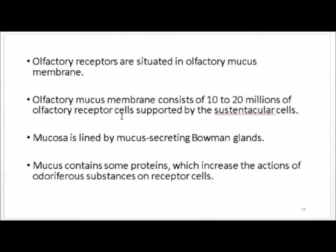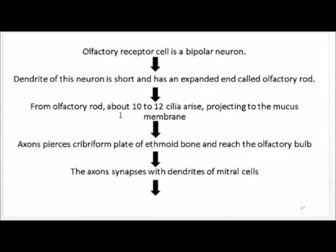To summarize point-wise: olfactory receptors are situated in the olfactory mucous membrane, which consists of 10 to 20 million olfactory receptor cells supported by sustentacular cells. The mucosa also contains mucus-secreting Bowman's glands. The mucus contains proteins which increase the action of odoriferous substances on receptor cells. The olfactory receptor cell is a bipolar neuron; its dendrite is short with an expanded end called the olfactory rod, from which 10 to 12 cilia arise and project into the mucous membrane. The axon pierces the cribriform plate of ethmoid bone and reaches the olfactory bulb, where it synapses with dendrites of the mitral cells.